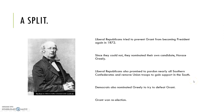Liberal Republicans also promised to pardon nearly all Southern Confederates and to remove Union troops to gain support in the South. Democrats also nominated Greeley to try to defeat Grant. Despite efforts by Liberal Republicans and Democrats to remove Grant, Grant won re-election as president.